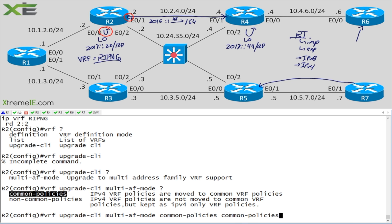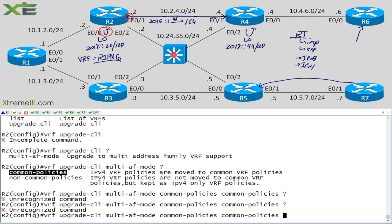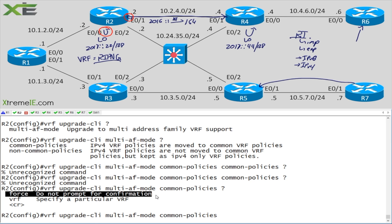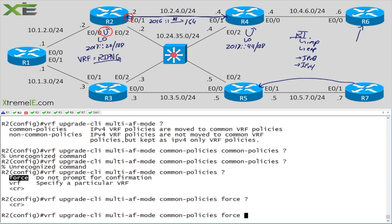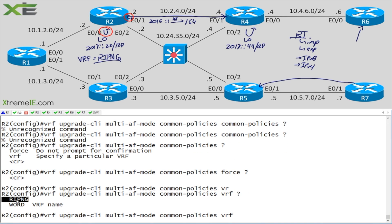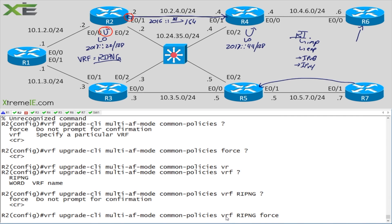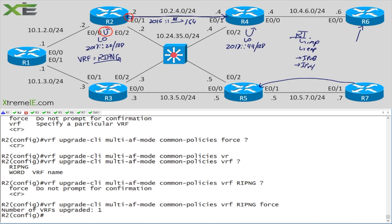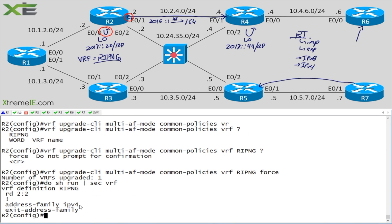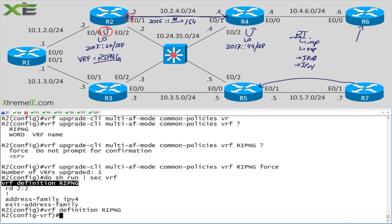We'll go ahead and say 'common-policies'. You can also specify 'force' to skip confirmation, or target a specific VRF if you have many and only want to upgrade one. We hit enter and it says it succeeded in upgrading our VRF. But looking at 'show run section vrf', we still only have an IPv4 address family — we're still not done because we need to activate this for IPv6.